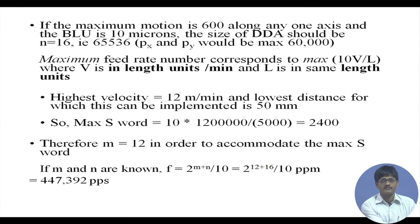With m = 12 and n = 16, the input clock frequency is f = 2^(m+n) / 10 = 2^28 / 10 ≈ 44,739,242 pulses per minute, which equals approximately 4,473,924 pulses per second (pps).